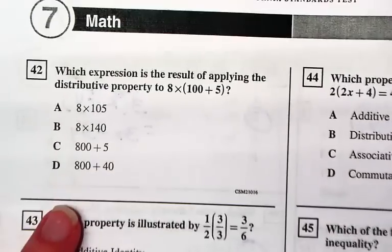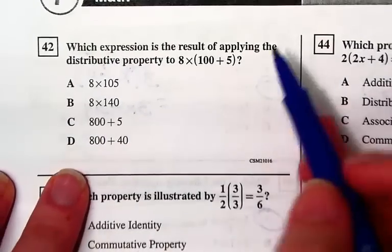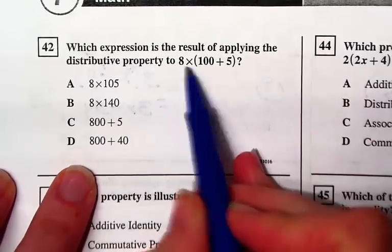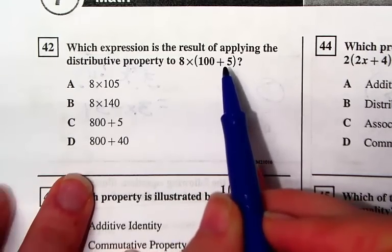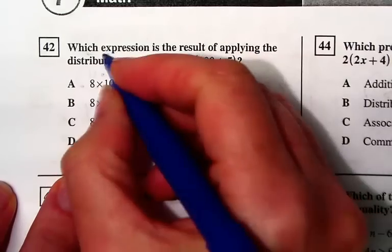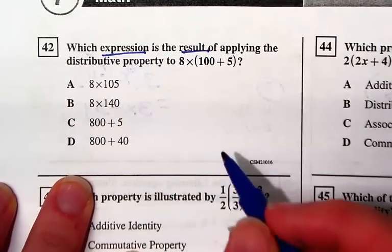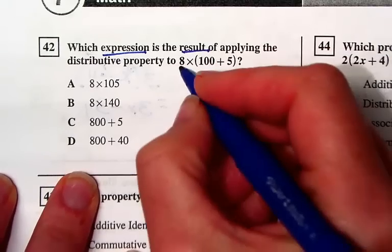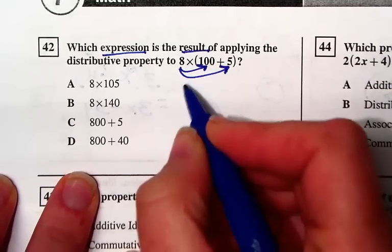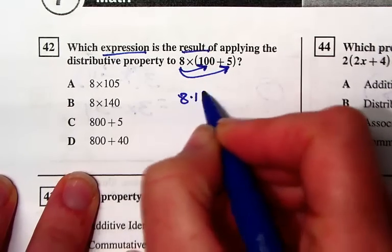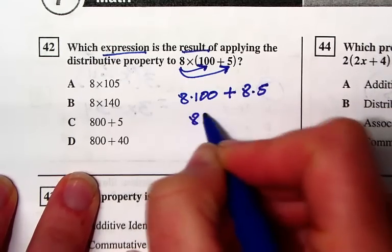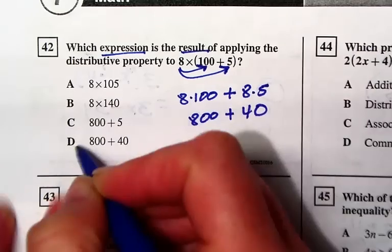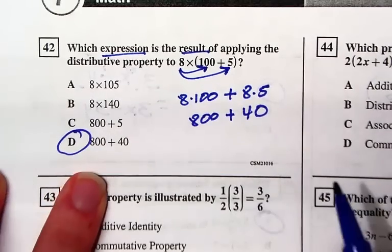For 42, which expression is the result of applying the distributive property? 8 is giving a great big hug to (100 plus 5). You want to give a hug to each one individually, so that's 8 times 100 plus 8 times 5, which is 800 plus 40. That's the distributive property.